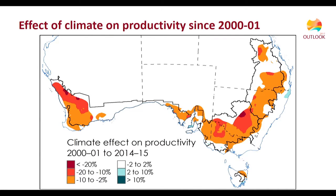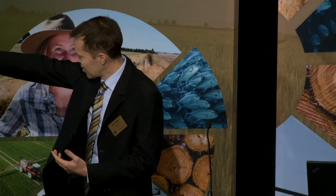This map shows the effect of climate since 2000 on the total factor productivity of cropping farms across Australia. The general story is not dissimilar to the winter rainfall map seen earlier — winter rainfall decline has been the main driver — so you're seeing more severe impacts on farm productivity in south-western Australia and south-eastern Australia. One thing that jumps out is that in terms of effect on productivity, the more severe impacts have tended to occur in the lower-rainfall, more inland parts of the cropping zone: the northern part of the western cropping zone and the more inland part of the New South Wales cropping zone. Whereas in higher-rainfall zones — for example, the southern coastal area in Victoria — the changes in climate haven't had much of an effect.